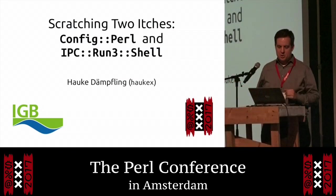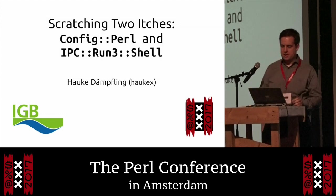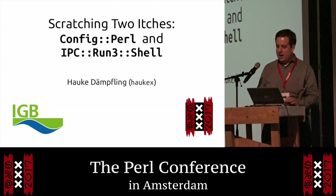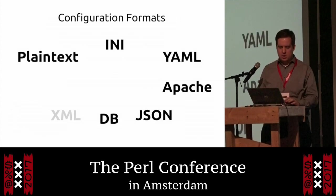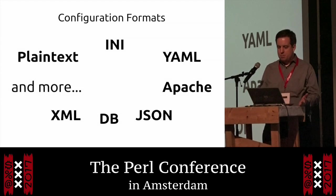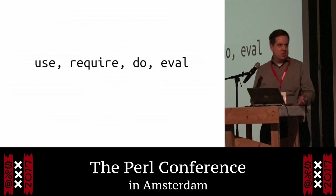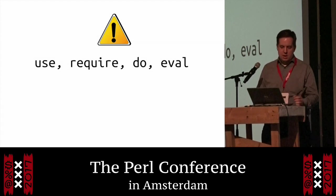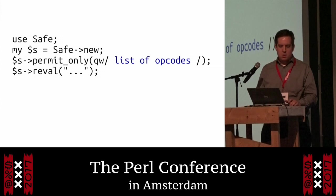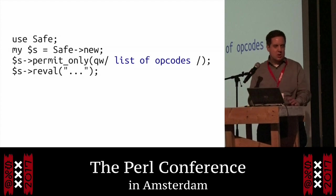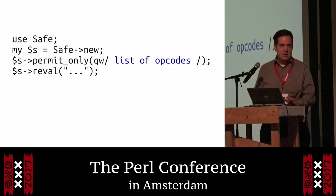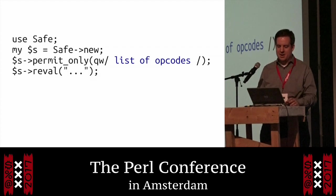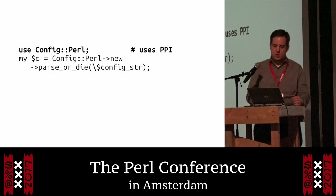I wanted to talk about scratching two itches I had. As you know, you can write configuration files in a whole bunch of different formats. But since we're writing Perl, what about Perl? You might reach for one of these wonderful tools, but they do have an issue — what do you do with untrusted code? You don't necessarily want someone's arbitrary code running on your machine. You might know about the module that limits opcodes that can be run, but it requires you to know the list of opcodes and how it might change across different versions of Perl. There are several data undumper modules on CPAN but none really scratched the itch.